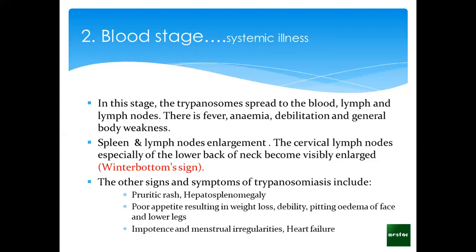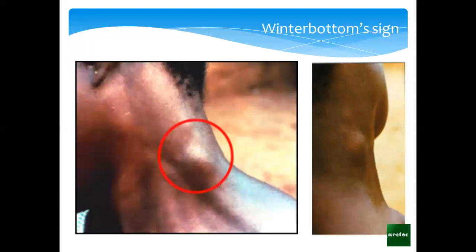Apart from that, we may have liver and spleen enlargement — splenomegaly — poor appetite, impotence, menstrual irregularities, and heart failure if it goes to the heart. Normally, if we're talking about the East African type — rhodesiense — we expect cardiac complications. The cervical lymph nodes becoming bigger and bigger leads to a common classical sign called Winterbottom's sign, as shown in the picture — these enlarged lymph nodes around the neck region.